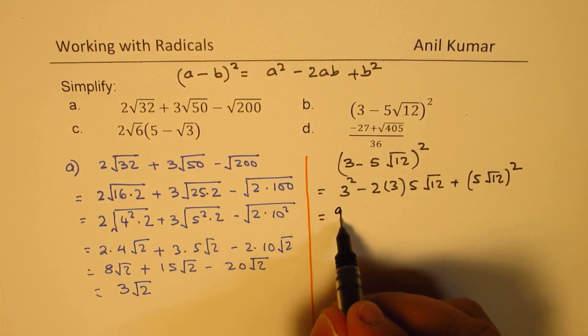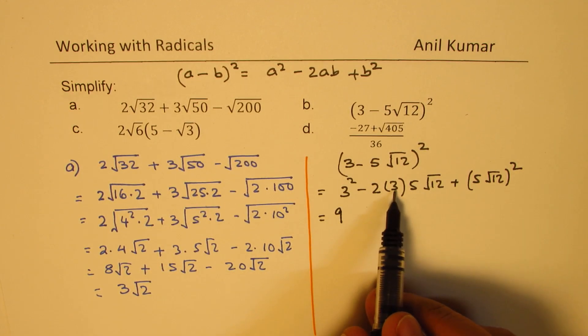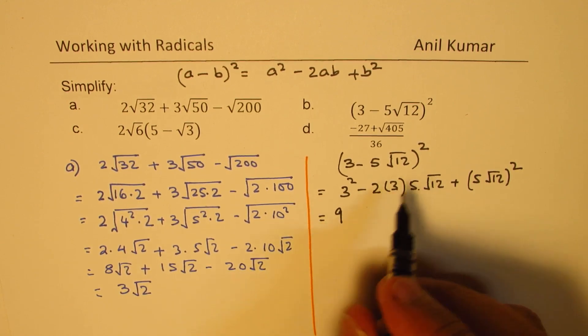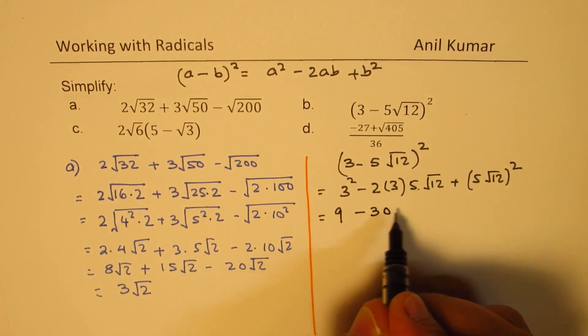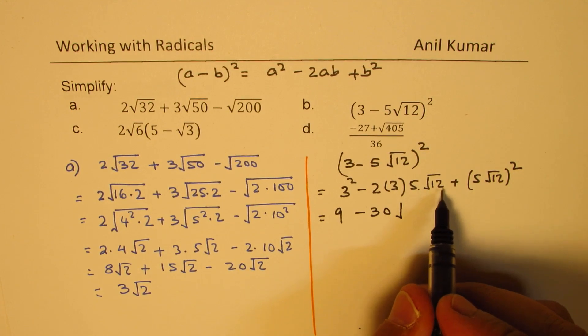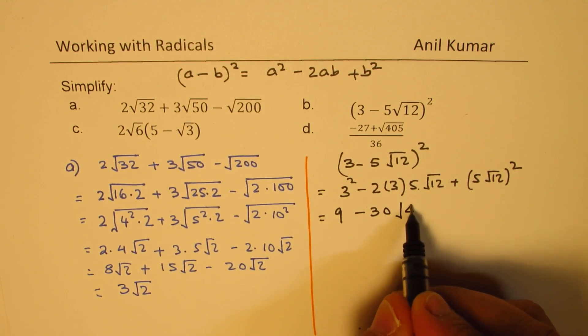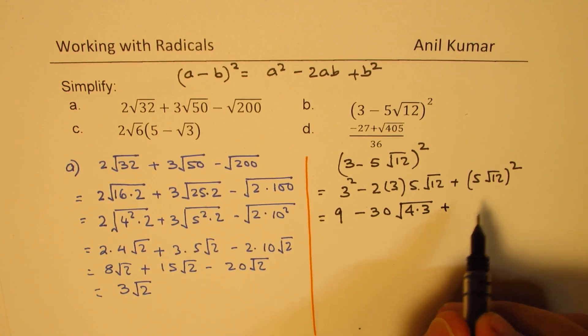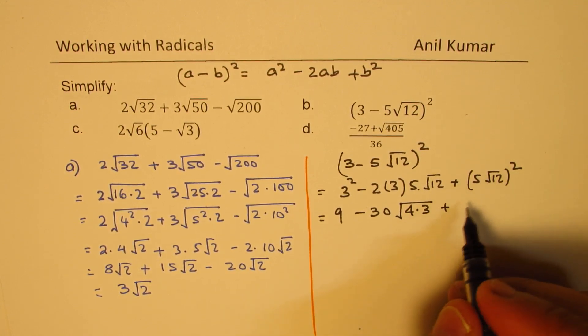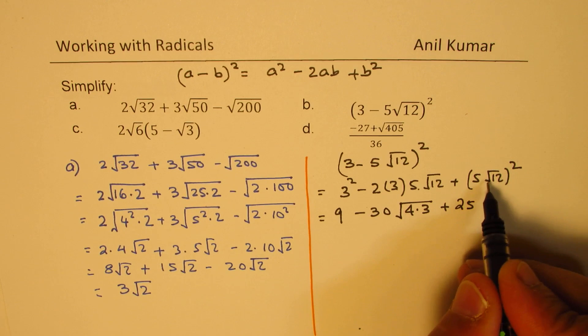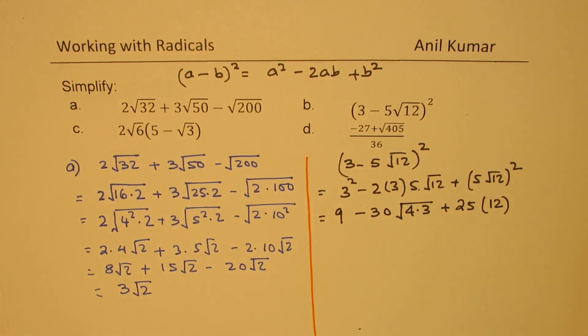So we get here 3² - 2 times 3 times that term which is 5√12 plus we have (5√12)². Now 3 square is 9, 2 times 3 is 6, 6 times 5 is 30, so we could write this as 30. Now √12, we could write this as 4 times 3. 4 is a perfect square and that is the reason. Now squaring 5 we get 25, so you just square both the terms and squaring square root gives you the number itself. Is that clear to you?